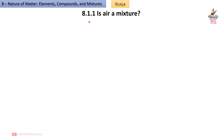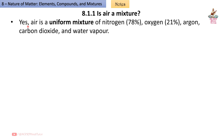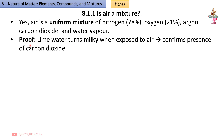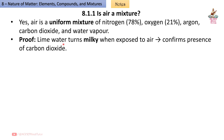8.1.1 Is Air a Mixture? Yes, air is a uniform mixture of Nitrogen (78%), Oxygen (21%), Argon, Carbon Dioxide and Water Vapor. Proof: Lime water turns milky when exposed to air, confirming the presence of Carbon Dioxide.